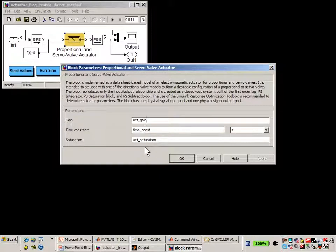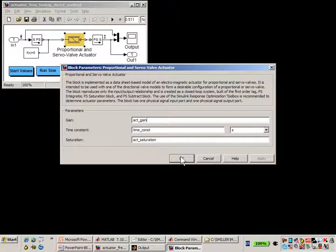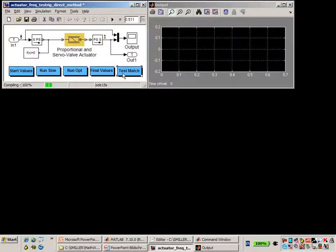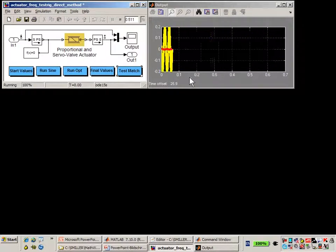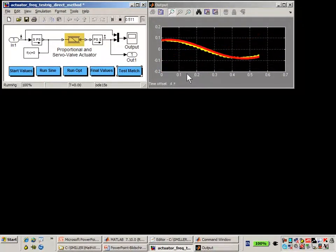These are the parameters that we'll tune with the optimization algorithms. The first thing that we'll need to do is to generate a frequency response with the initial values of the parameters. We're generating a frequency response at 100% signal and at 40% signal.